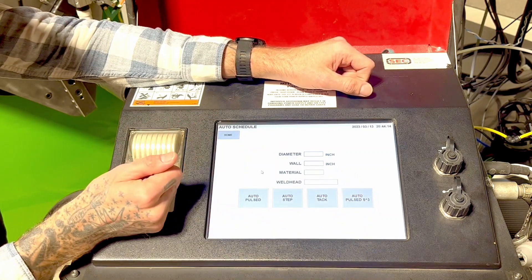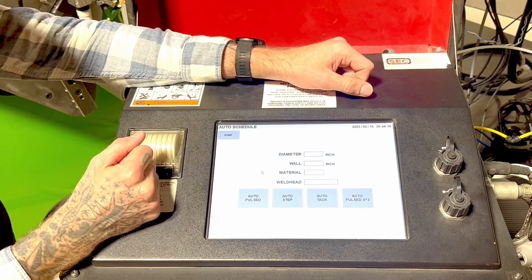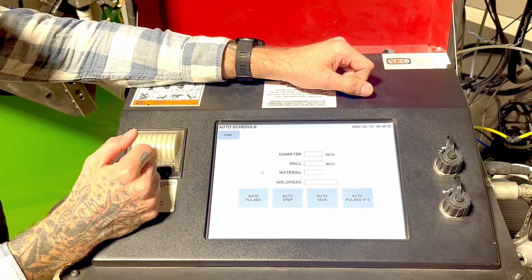Then we have auto pulse S3. This is the one that we're going to be using today. This is also continuous rotation but it has a continuous amperage drive.